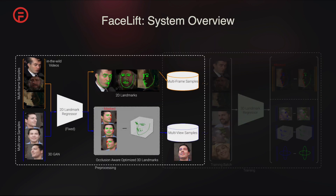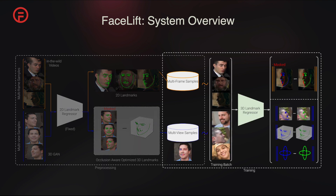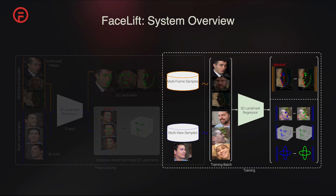Our system starts with preprocessing in-the-wild videos from the Celeb V dataset for 2D landmark detection, followed by sampling from the 3D GAN, detecting 2D landmarks, and optimizing 3D landmarks for a set of multi-view GAN samples. We then combine data from both the video and GAN sources during training to enhance the robustness of our model. We mask the 2D video branch's loss via a visibility mask computed from the model's predicted pose.